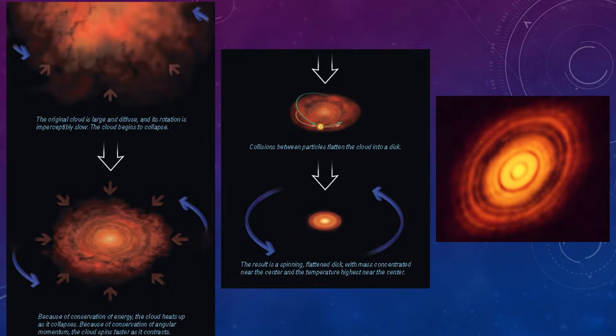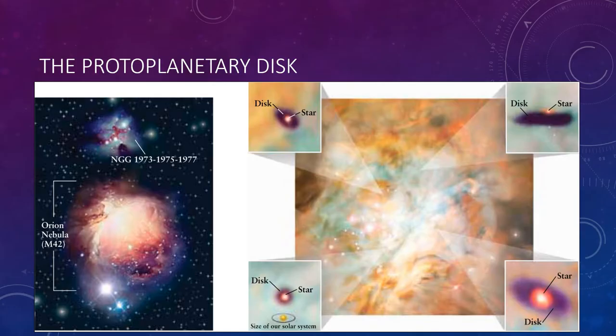This model explains why planetary orbits all lie in essentially the same plane, and why they all orbit the sun in the same direction—because they all formed from the same spinning disk. In summary: we started with the solar nebula, which began to slightly rotate and collapse. As it rotated more quickly, it flattened into a disk, planets and the sun formed, and ultimately we see an image like a forming solar system.